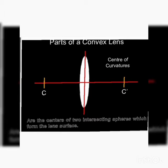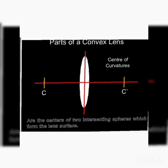अब बात करते हैं center of curvature की। Center of curvature are the centers of two intersecting spheres which form the lens surface। Lens की surface पे जो दो lines आपस में मिलती हैं — एक horizontal एक vertical — और इसके जो central point है जहाँ पे join हो रही है, इसे हम optical center कहेंगे। यह जो पूरी axis आती है यहाँ से यहाँ तक इसे हम principal axis कहेंगे, और यह जो point है इसे center of curvature कहते हैं।